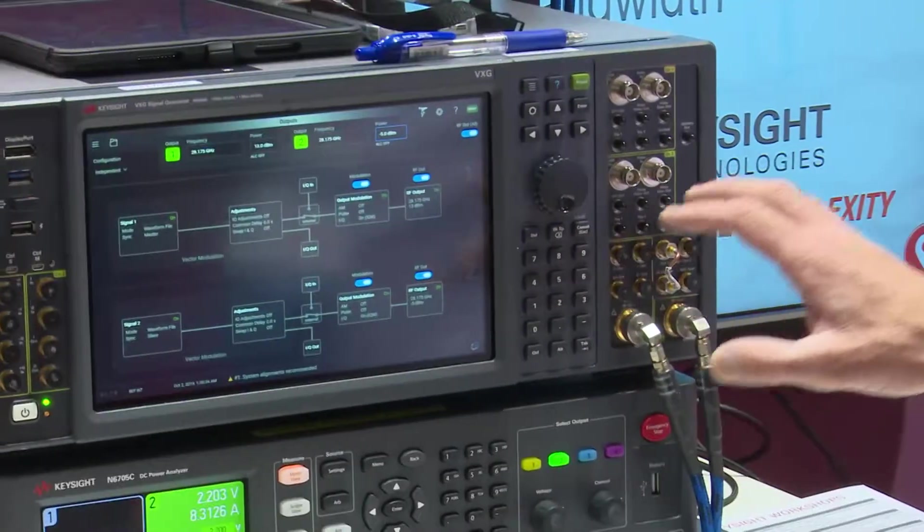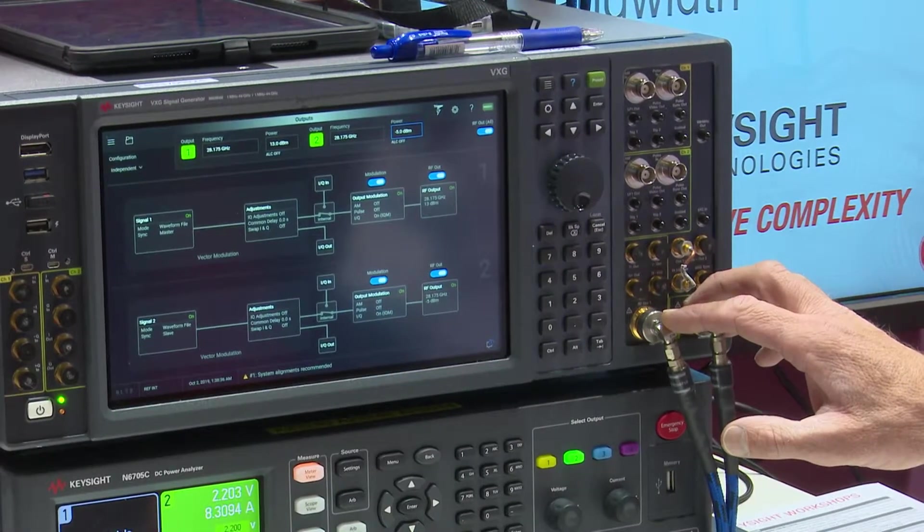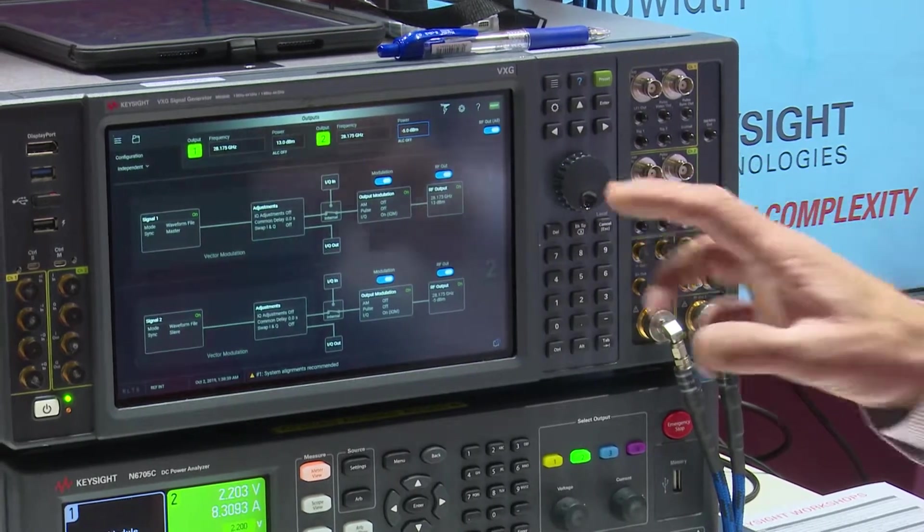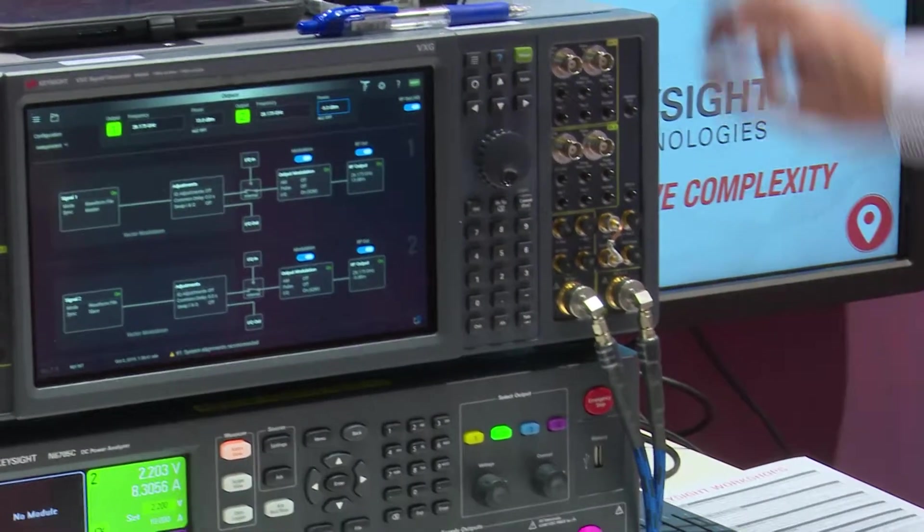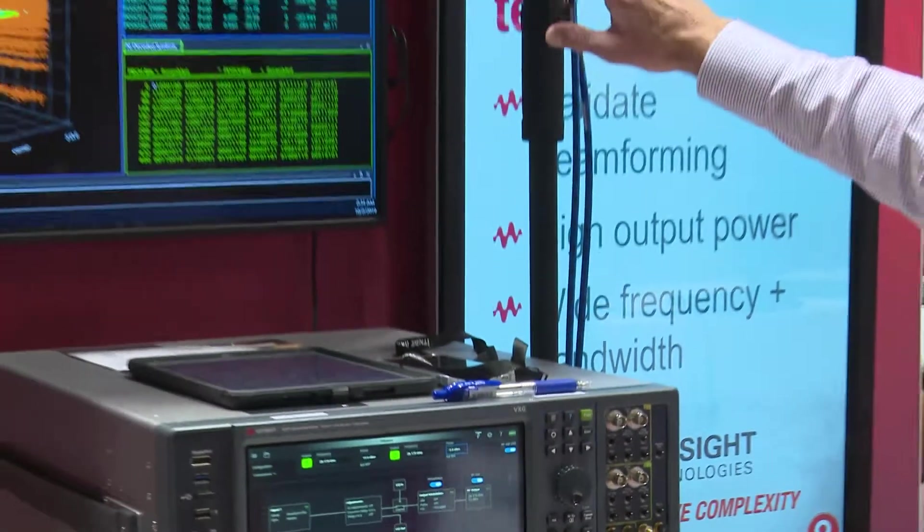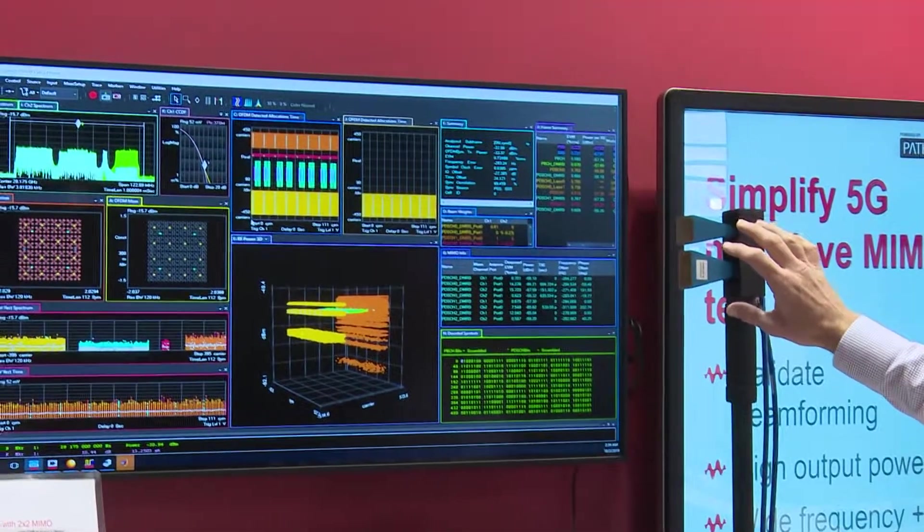In this demo we're generating a 5G new radio signal at 28 gigahertz using two layer spatial multiplexing. So both of these outputs are connected to the probe antennas which are oriented at a vertical and horizontal polarization.